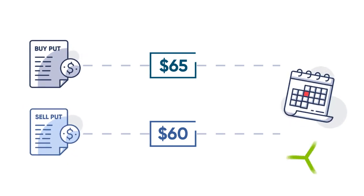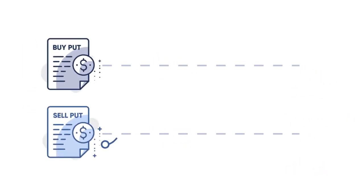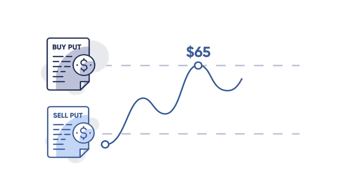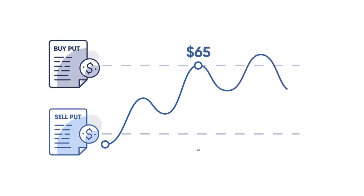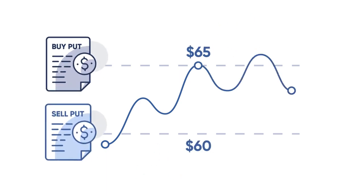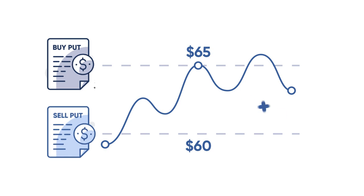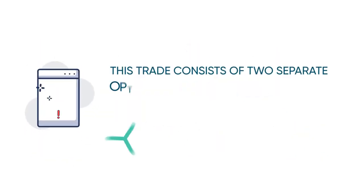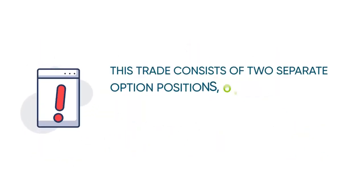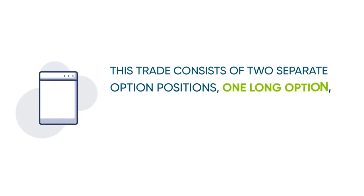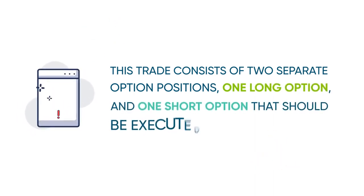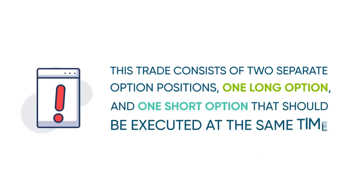For example, you could buy a put with a strike at or near where the stock is trading while selling another put option that has a lower strike. Note that this trade consists of two separate option positions — one long option and one short option — that should be executed at the same time.